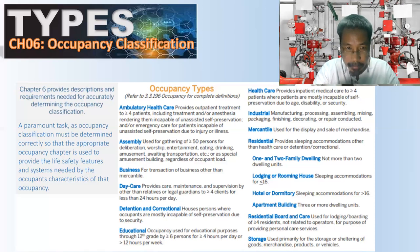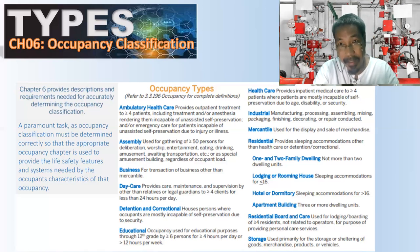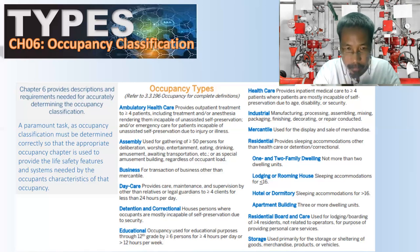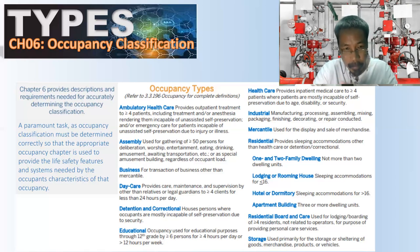Daycare occupancy provides care, maintenance, and supervision — by persons other than relatives or legal guardians — to four or more persons for less than 24 hours per day. Daycare is less than 24 hours per day; if it were 24 hours, that would be a different occupancy type such as residential.